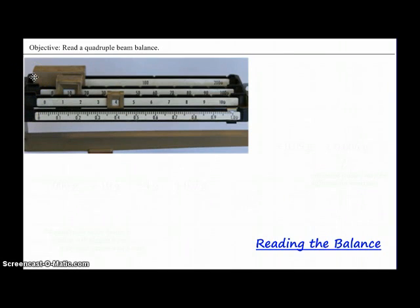When we take a look at the beam farthest away from us, that's where we're going to start. And we can see that our rider is all the way over to the left, so it's at 0 grams. That would give us a reading of 0, 0, 0 grams, or no hundreds. Our next beam here in front of that, you'll see that the rider is boxed around the 10. What that means is that it's showing a reading of 10 grams.